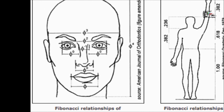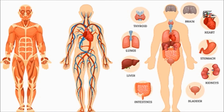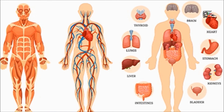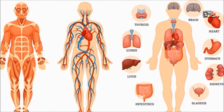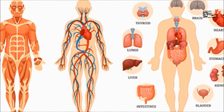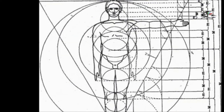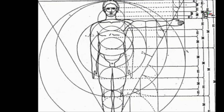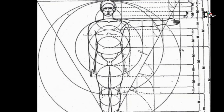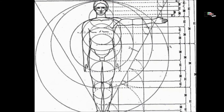Our own body is following the sequence too. If we look at the amount of each of our organs, it all appears in this strange sequence of numbers. If we put these numbers in blocks, it starts to form a spiral.